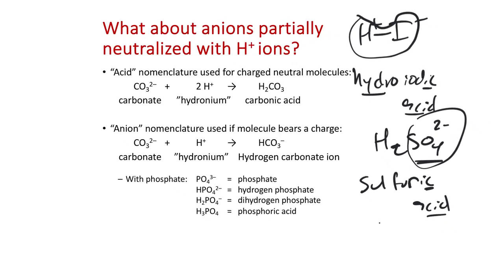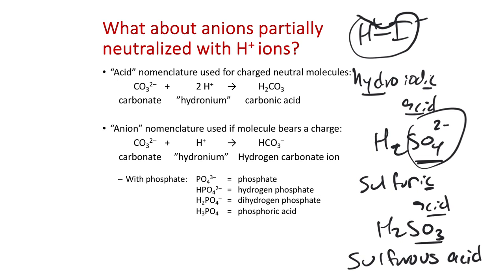For H2SO4: sulfate is a 2-, so it took two hydrogens to balance the charge — this is sulfuric acid. For H2SO3: that's sulfite, and -ite ions go to -ous acid, so this is sulfurous acid. For carbonate: carbonate takes two H+ ions, giving you carbonic acid, H2CO3. Carbonate's -ate ending becomes -ic acid. That's the same basic nomenclature as sulfuric acid.